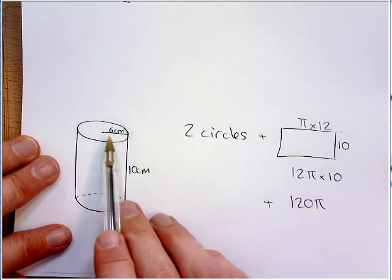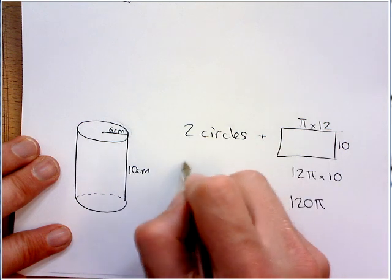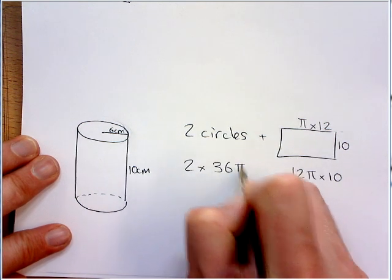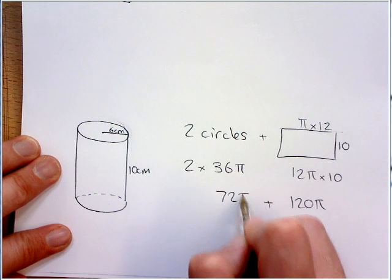The two circles, we worked out one of the circles earlier on to be 36 pi. So, this one and this one, with two of those, so that would be 72 pi.